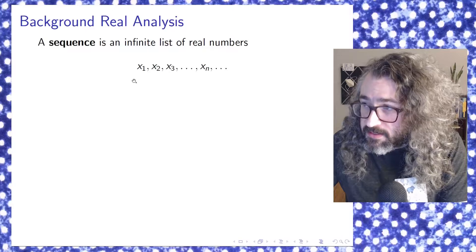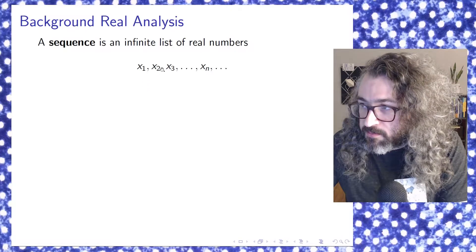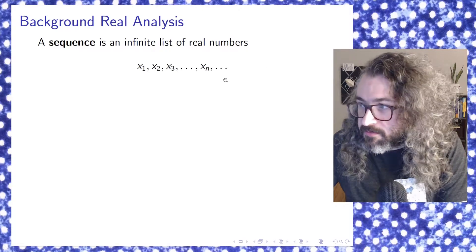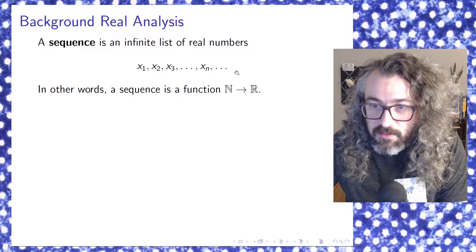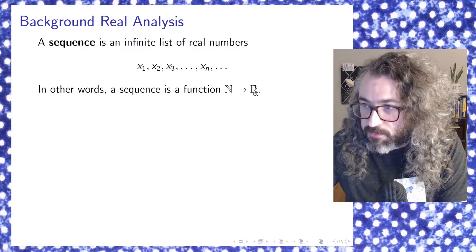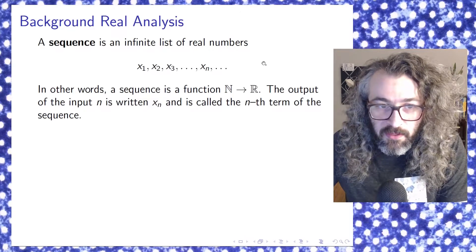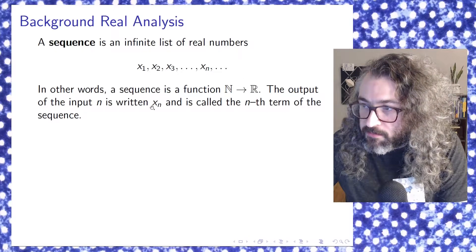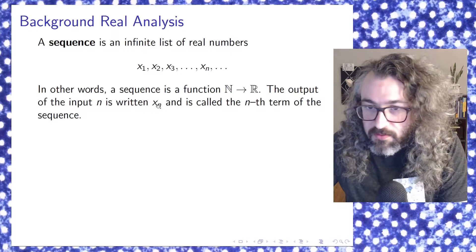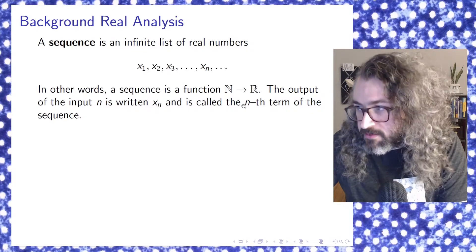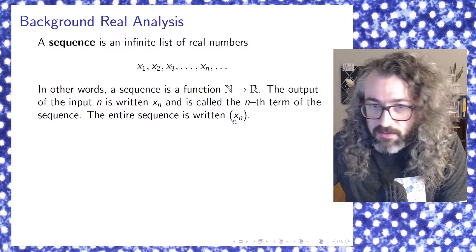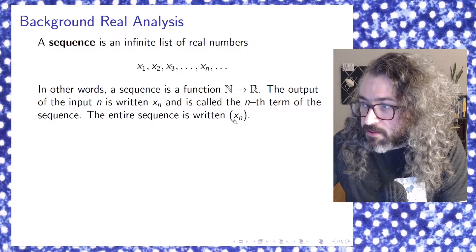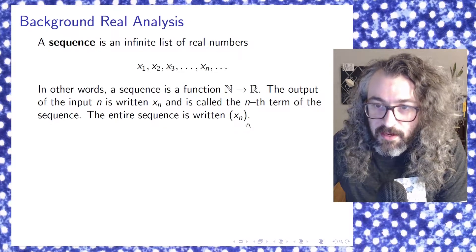A sequence is an infinite list of real numbers — x1, x2, x3, an infinite list of numbers like that. Another way to say this is a sequence is a function whose domain is the set of natural numbers and whose codomain is the set of real numbers. So if you input the natural number n, the output you get is x sub n, and that's called the nth term of the sequence. The entire sequence is written in parentheses like this — x sub n in parentheses means the entire list.